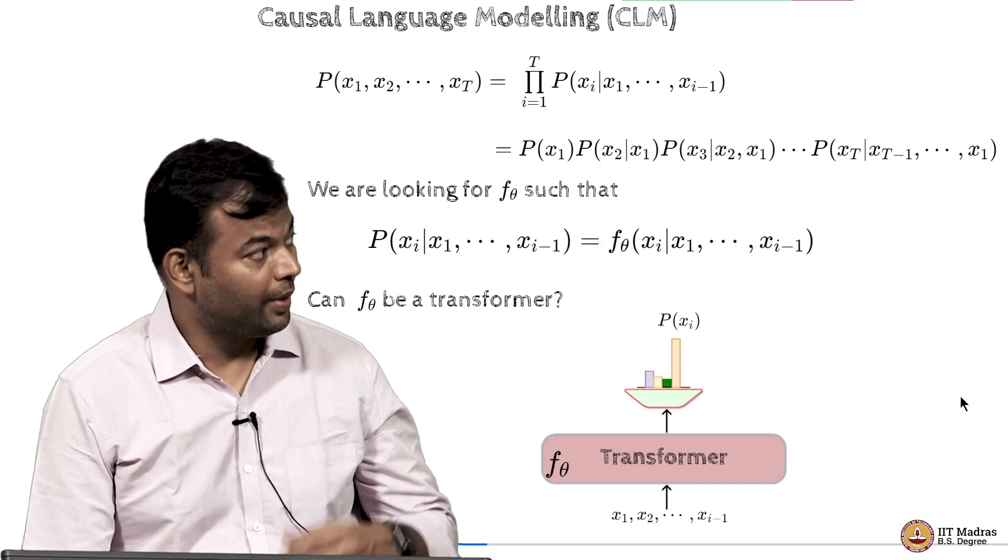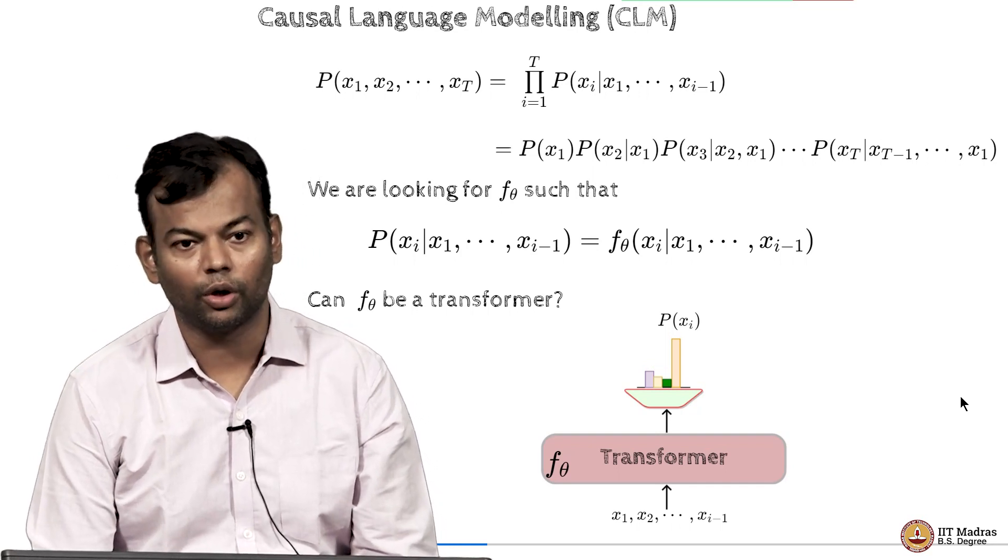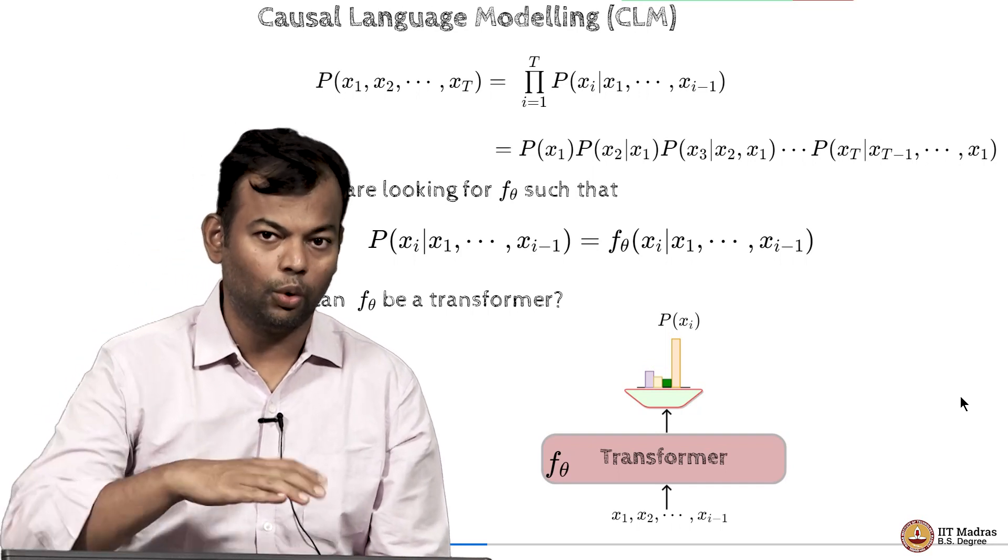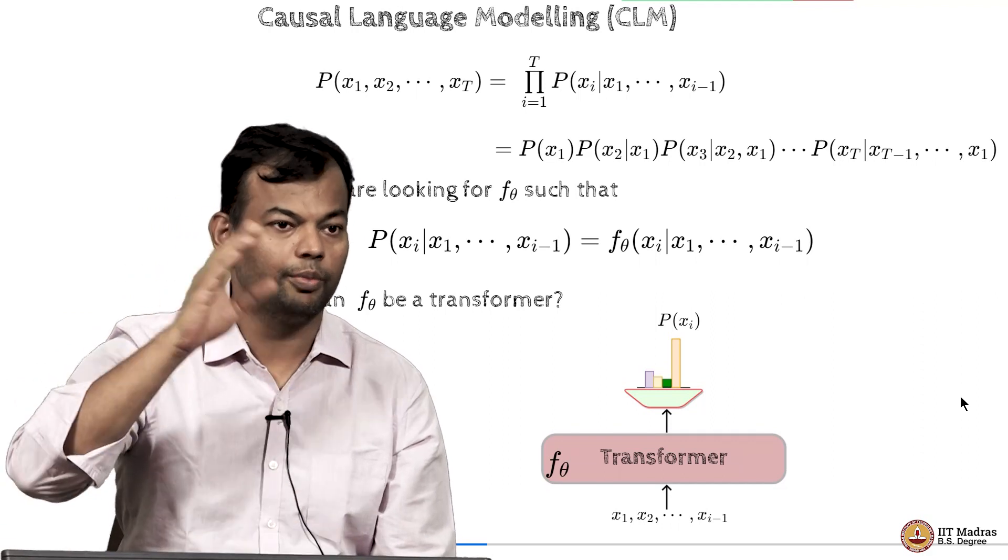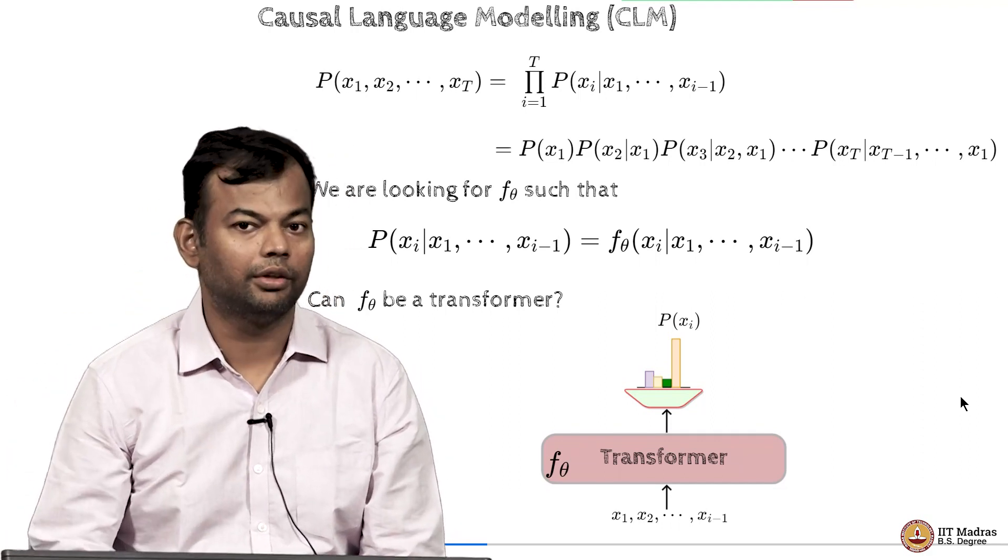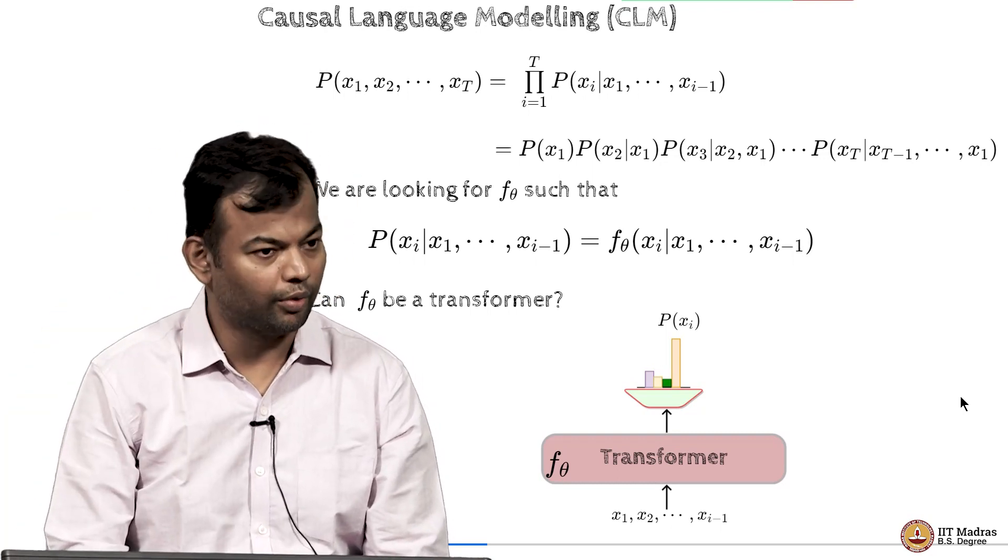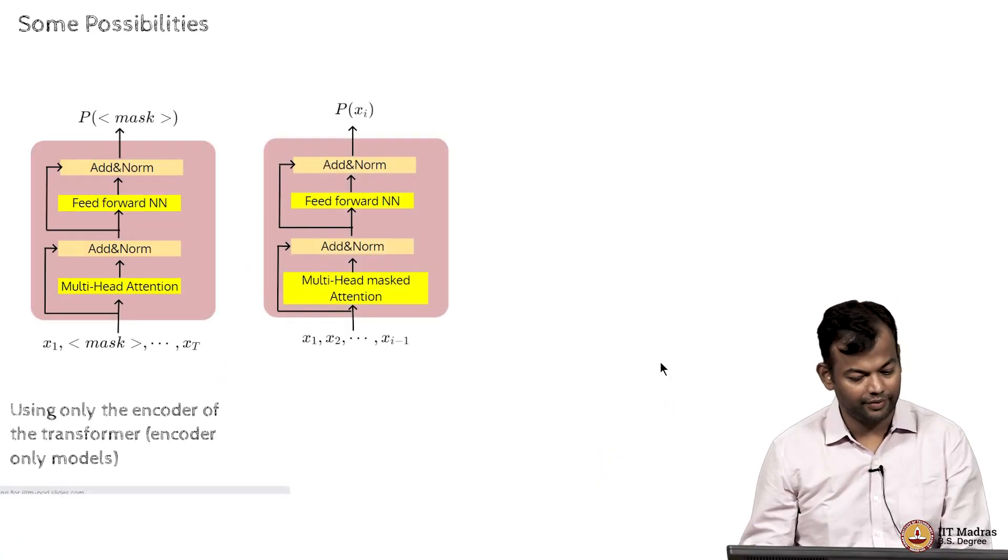Okay, so welcome back. This is where we had stopped before the break. We were discussing the idea of causal language modeling where the goal is to predict distribution over the vocabulary, and we were toying with this idea of can transformers be used as a function for predicting this distribution over the vocabulary. Then we said that there could be three possibilities that we will consider.